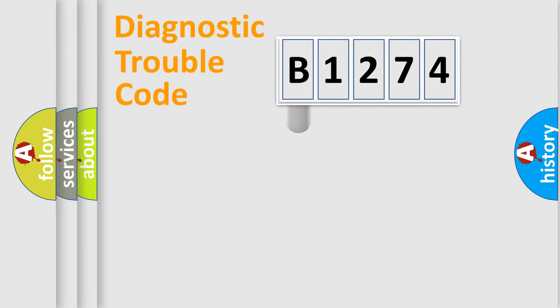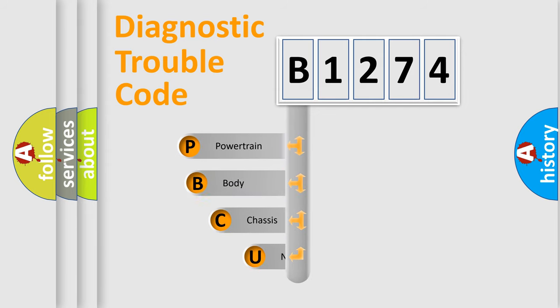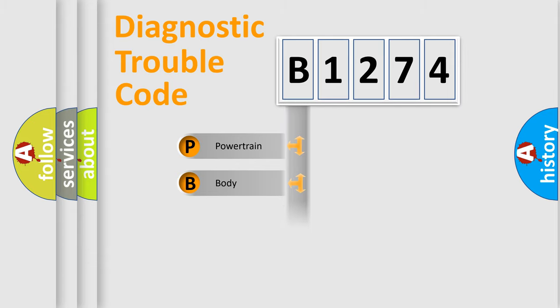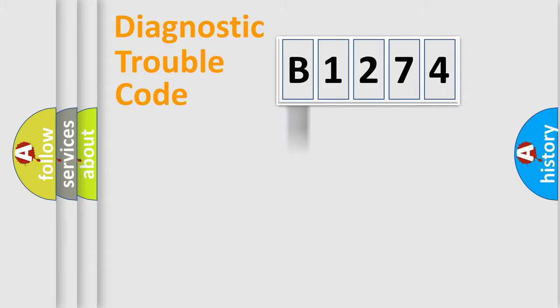First, let's look at the history of diagnostic fault code composition according to the OBD2 protocol, which is unified for all automakers since 2000. We divide the electric system of an automobile into four basic units: Powertrain, Body, Chassis, and Network.